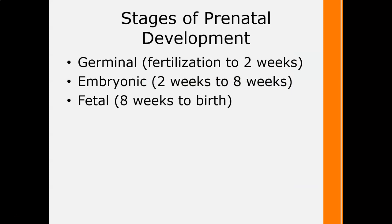The field divides prenatal development into three stages. The germinal stage — sometimes called the zygotic stage — goes from the moment egg and sperm meet to about two weeks, really up to implantation. The second stage is the embryonic stage, from implantation until the end of the eighth week. The fetal stage is from the ninth week to birth, with a full-term pregnancy being 40 weeks, although 38 to 39 weeks is also considered full term.